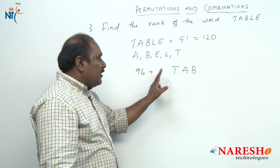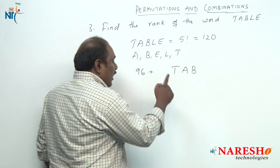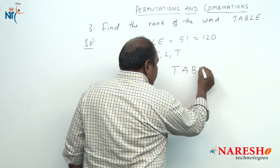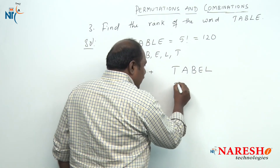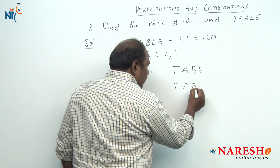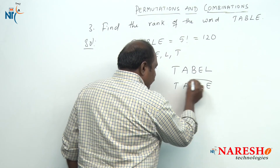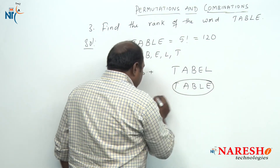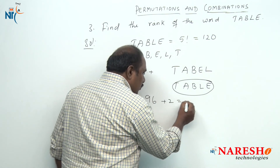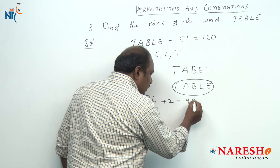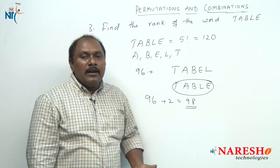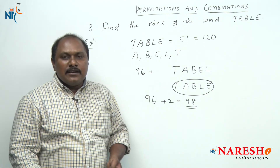So my answer should be either 97 or 98. According to alphabetical order, the first one should be TABLE (T, A, B, E, L) and the next one would be T, A, B, L, E. So my answer is 96 plus 2, which is 98. The rank of the word TABLE is 98.